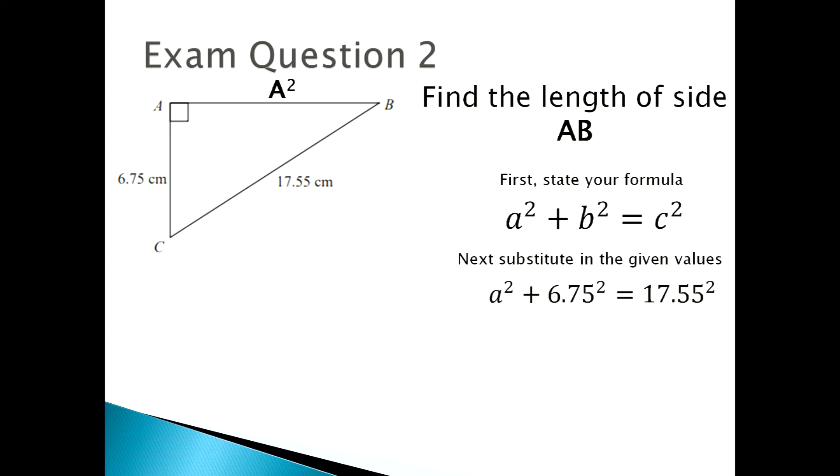Then you have to subtract b squared from c squared. Then you rearrange the equation to get a squared equals 17.55 squared minus 6.75 squared. Then you work out your squares. So a squared equals 308.0025 minus 45.5625.